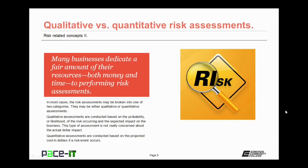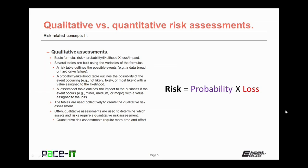This type of assessment is not really concerned about the actual dollar impact, just about the likelihood that it's going to occur. Quantitative assessments, on the other hand, are conducted based on the projected cost in dollars if a risk event occurs. The basic formula for a qualitative assessment is: risk equals probability times loss, or likelihood times impact.